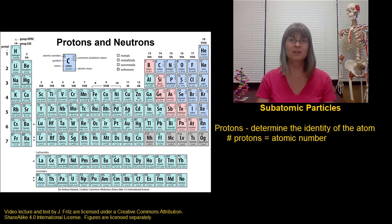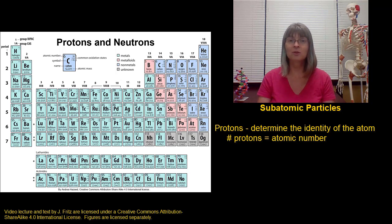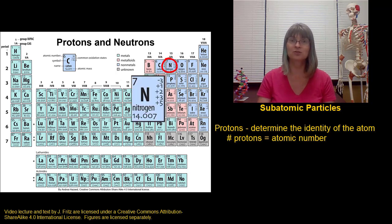The number of protons is so important that you can't change the number of protons without changing the identity of the atom. If I have an atom of oxygen, so it has eight protons in it, and I take one of the protons out, I no longer have oxygen. If it only has seven protons, it can't be oxygen. Now it's nitrogen instead because nitrogen has seven protons.